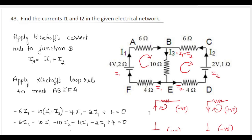This question is taken from the Physics Model Paper 2 of 2024-25, question number 43. We need to find the currents I1 and I2 in the given electrical network.